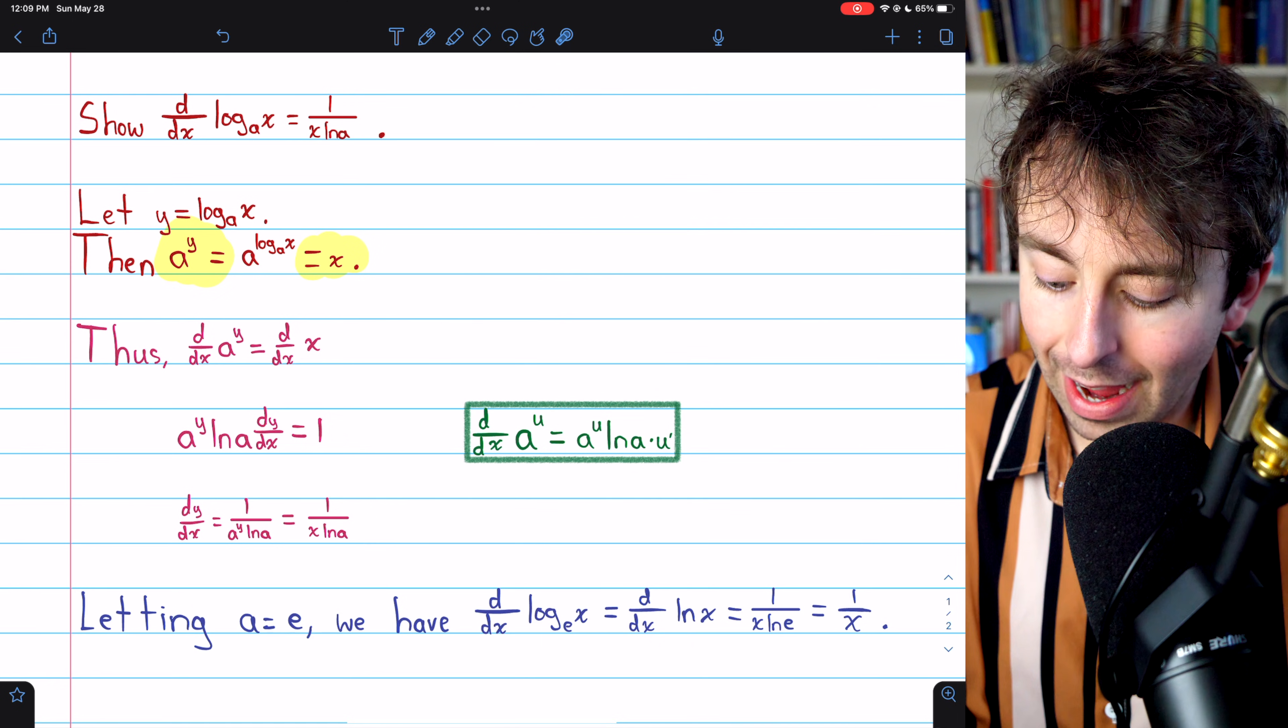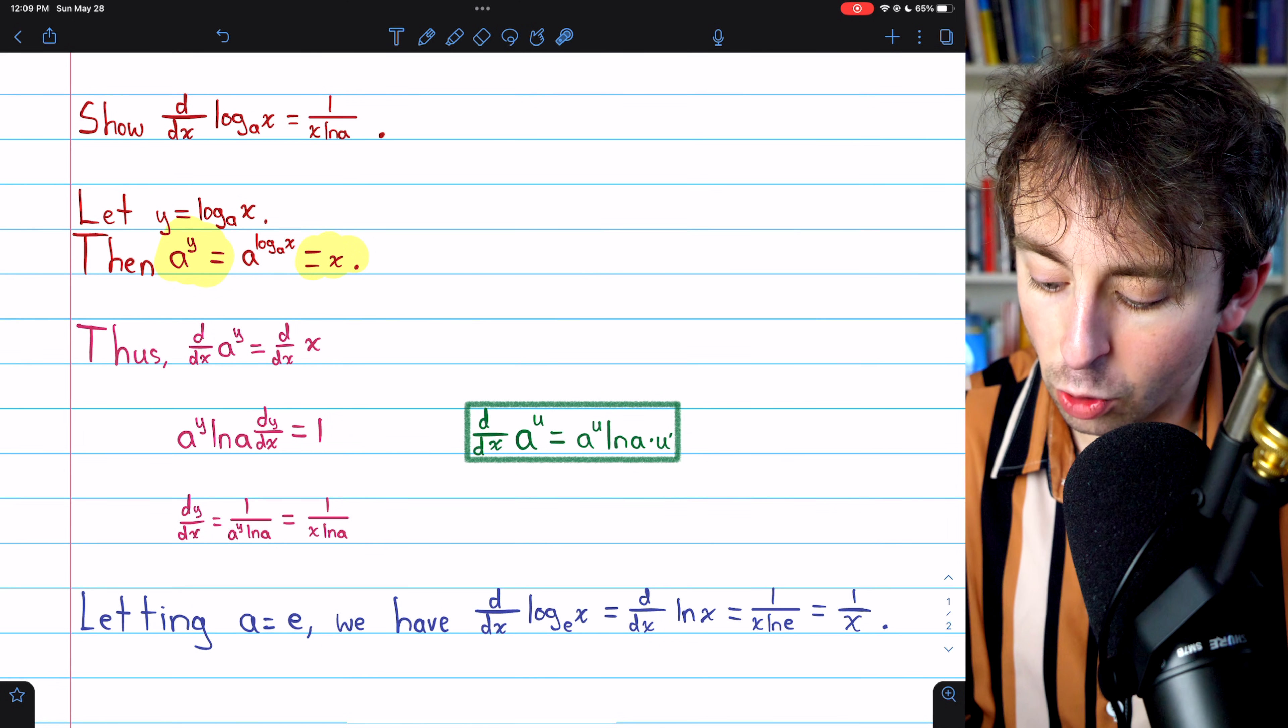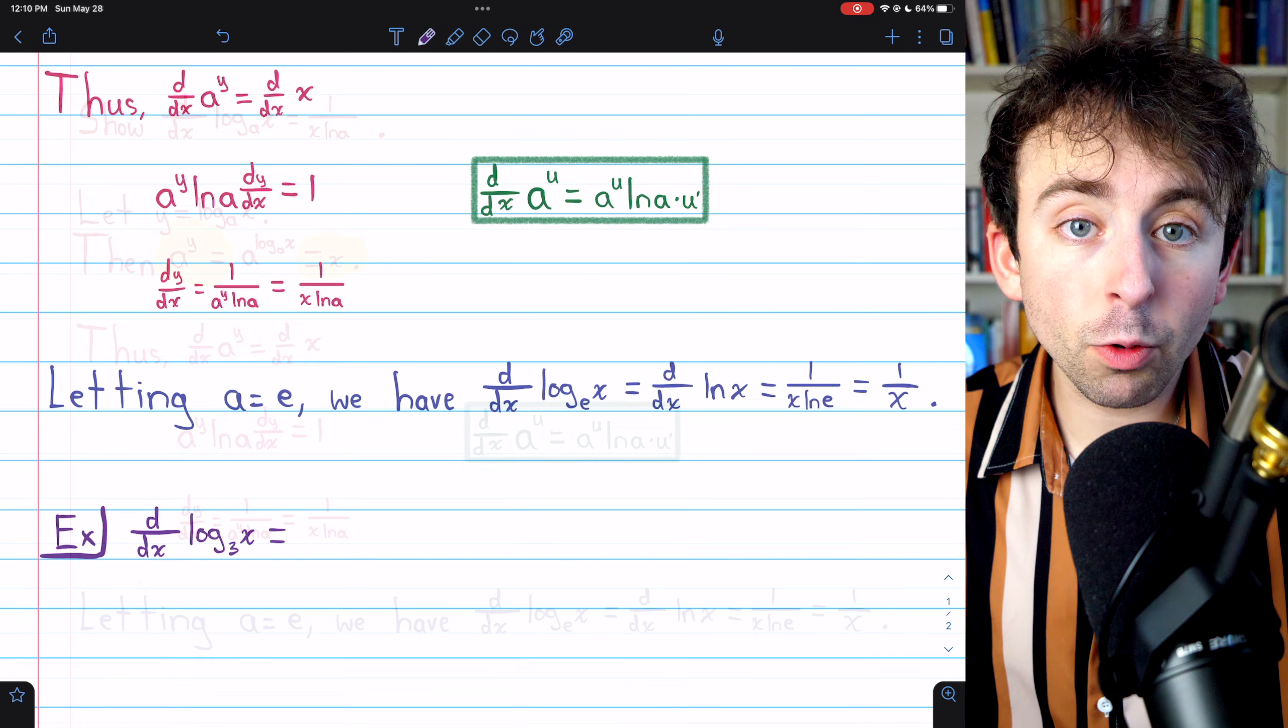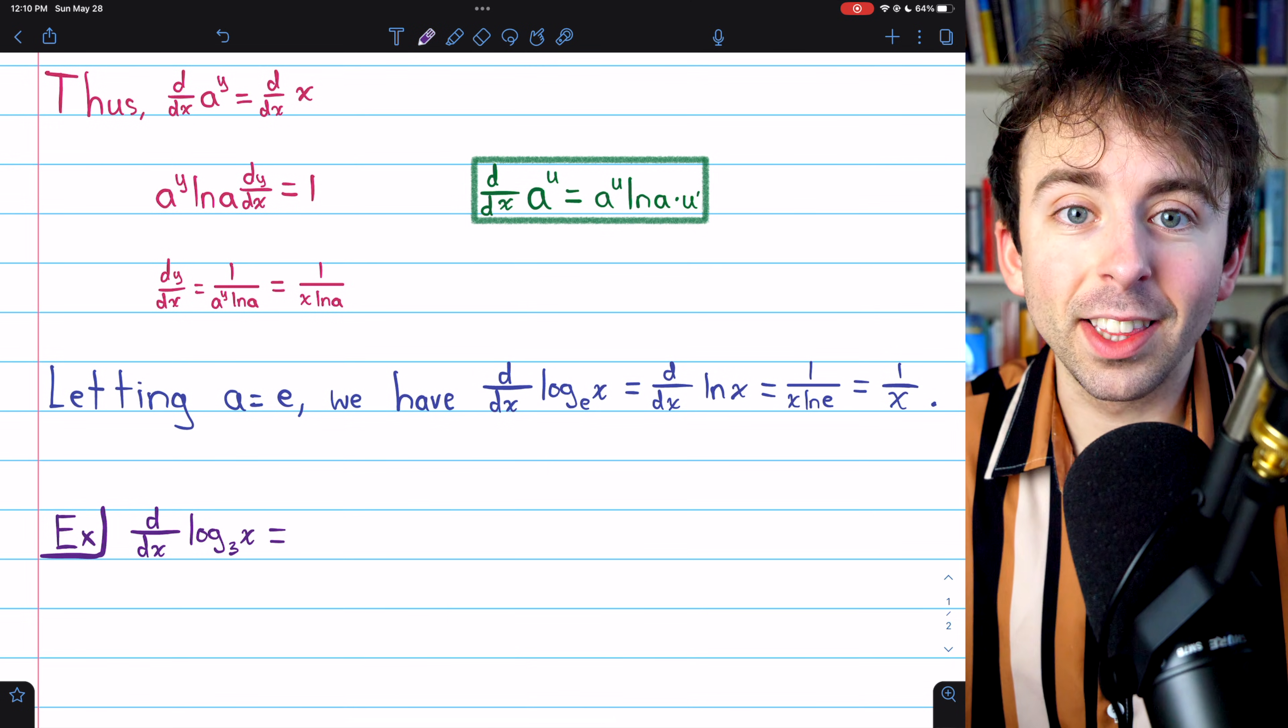So the derivative of the natural log is just equal to 1 over x. Very important formula, don't forget it. The natural log is going to show up a lot in this course.